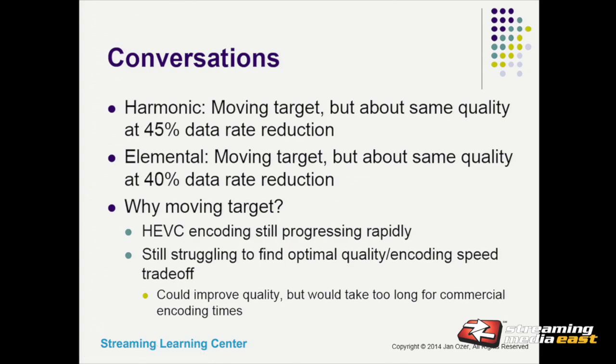I spoke to Harmonic and Elemental. What I'm hearing is same quality at 45% from Harmonic, same quality at 40% from Elemental. It's a moving target because you can encode HEVC at five minutes a frame and get better quality, but that's not commercially reasonable. What they're trying to find is an acceptable encoding time versus quality trade-off — that's why the numbers are moving. People get better at encoding as they get more familiar with codecs, so I expect to see significant improvements in quality over the next two or three years. But right now, this is what they're quoting.